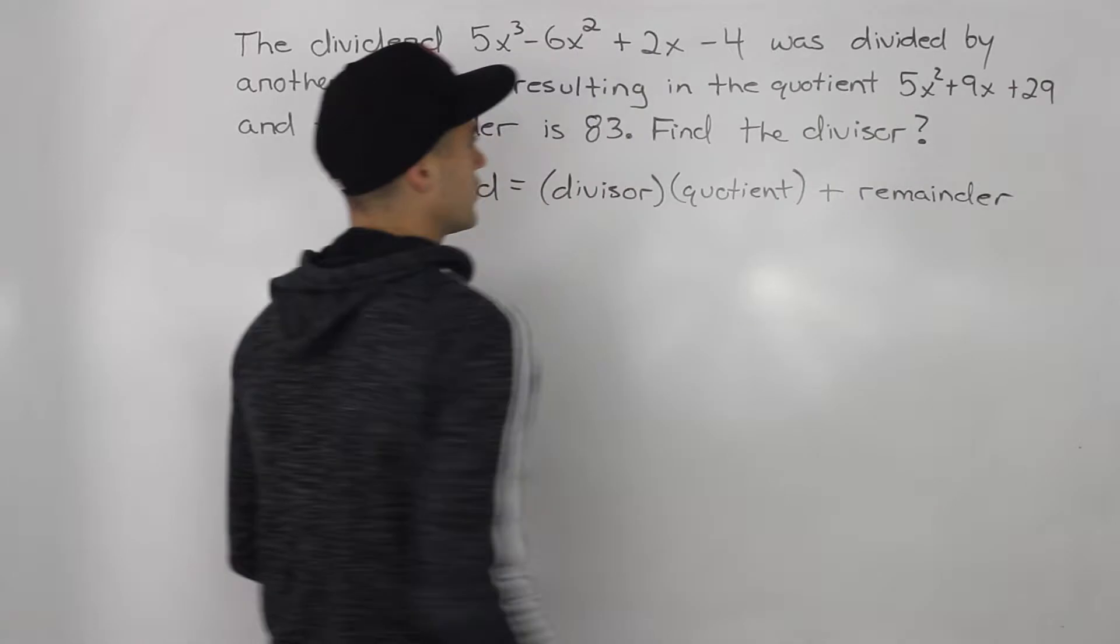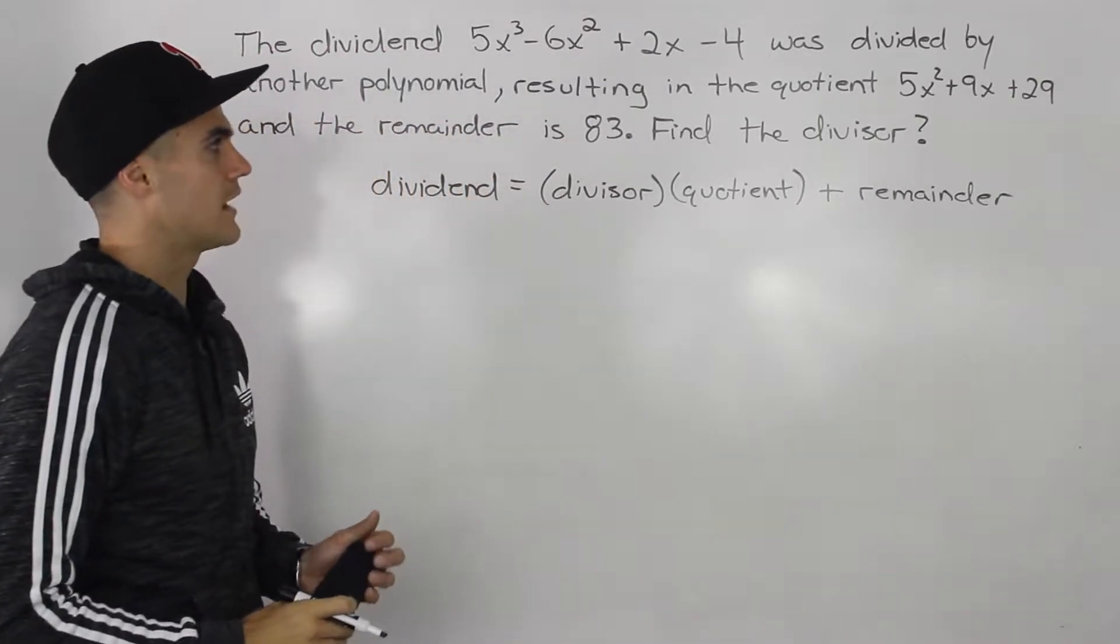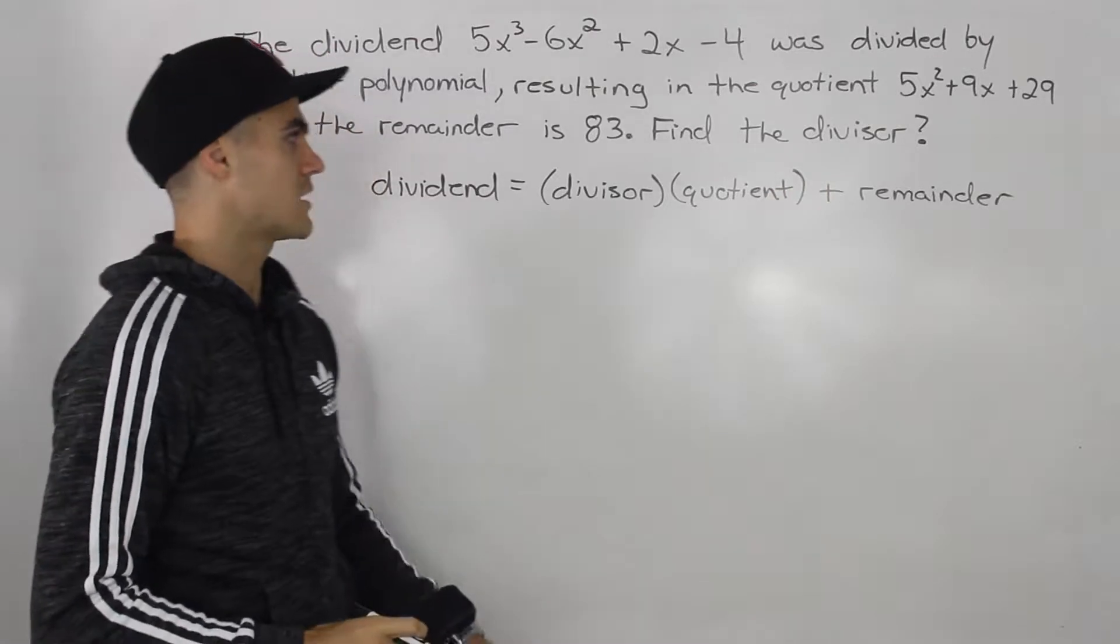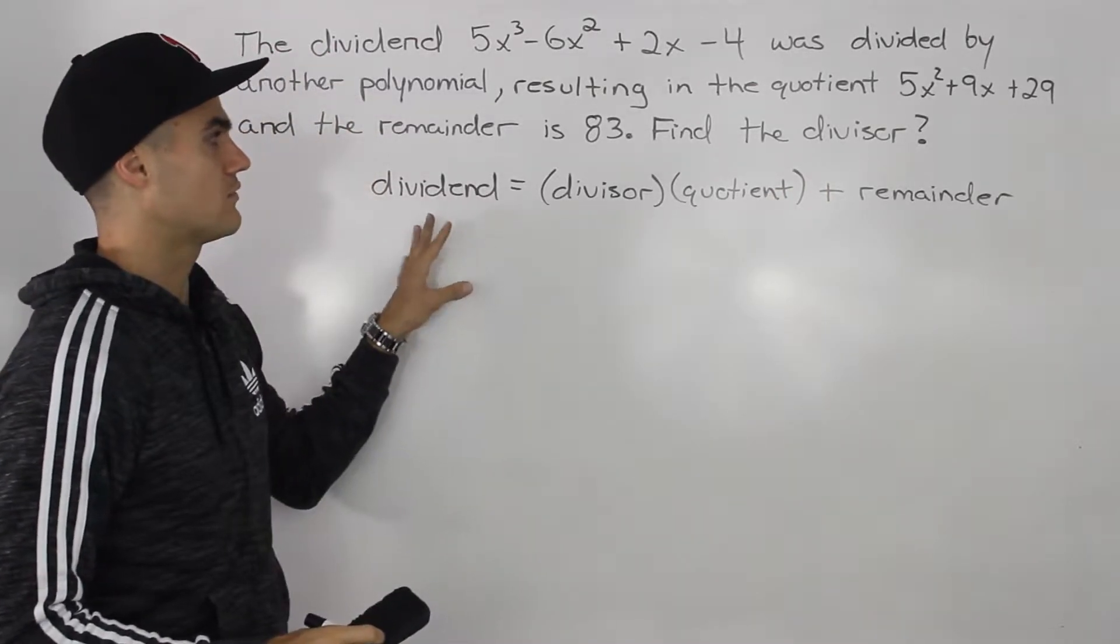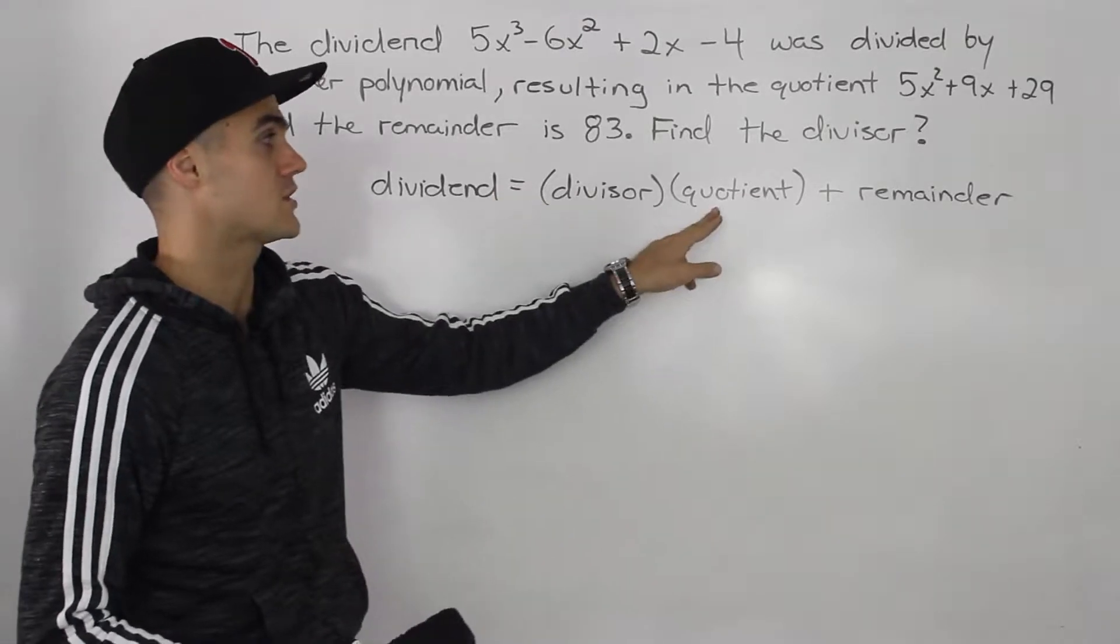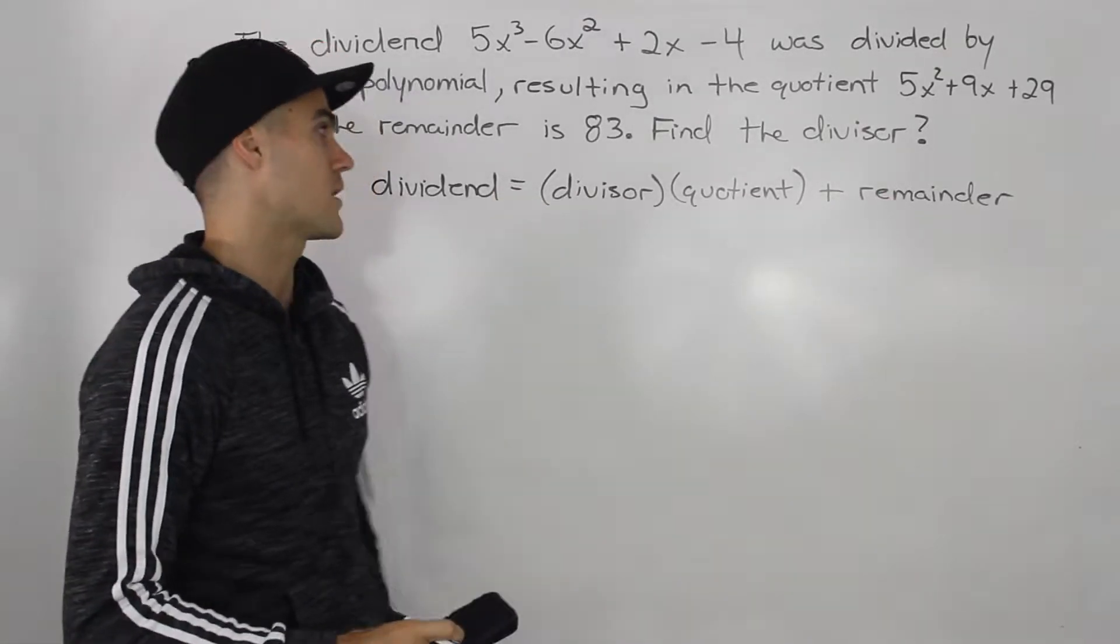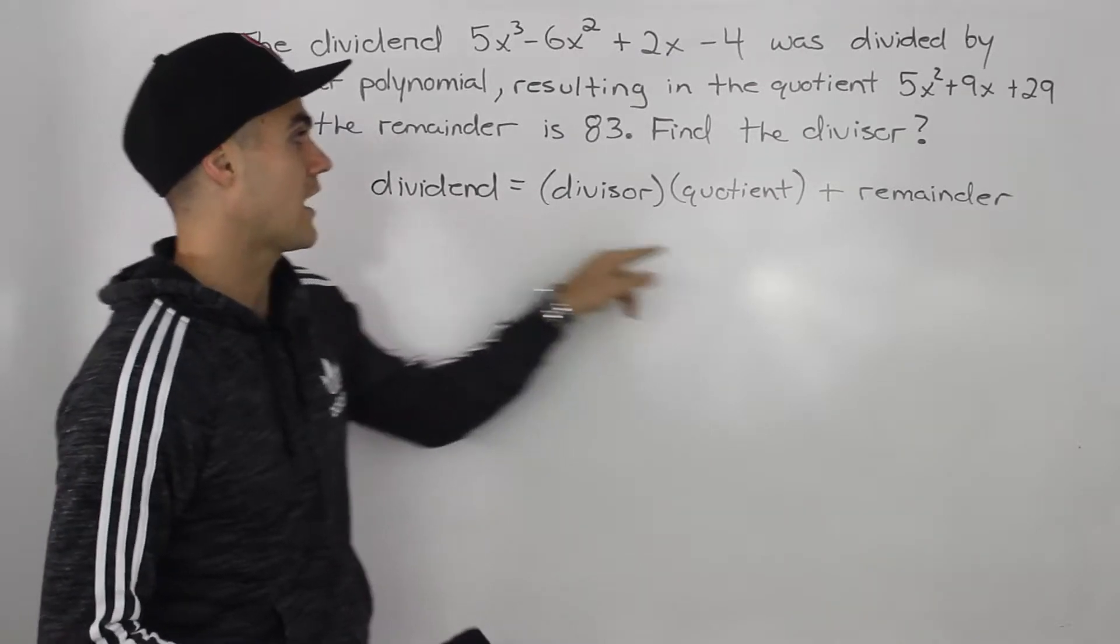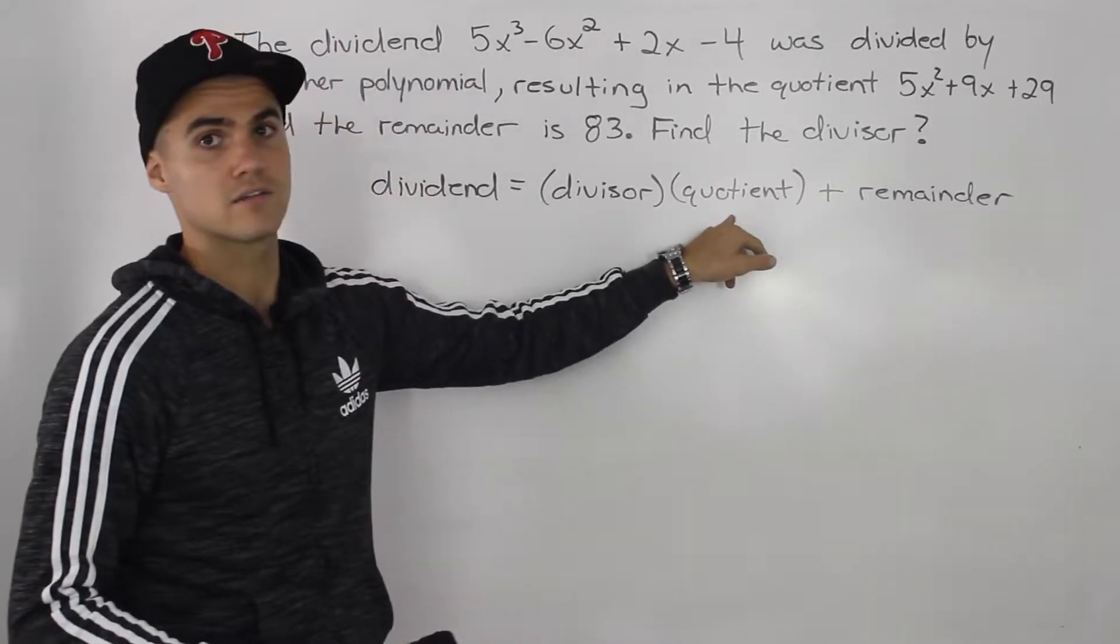So this is a pretty popular question that comes up. Now you won't always be finding the divisor so sometimes you'll be given one of the other three variables. Perhaps you're given the dividend, divisor, and quotient and you have to find the remainder or maybe you'll be given the divisor, dividend, and remainder and you have to find the quotient.